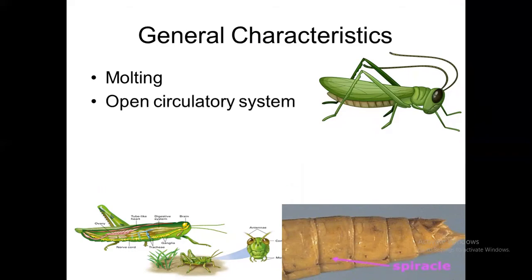They have an open circulatory system. Our circulatory system is closed, but their circulatory system is called an open circulatory system because they have no blood vessels. They have a body cavity filled with blood, and this is called an open circulatory system.